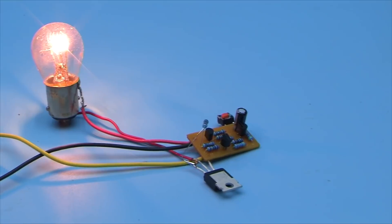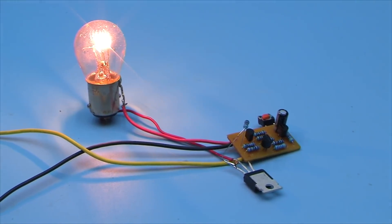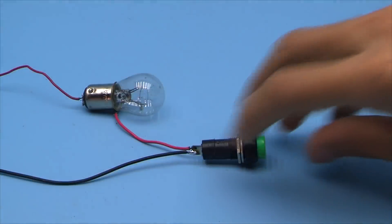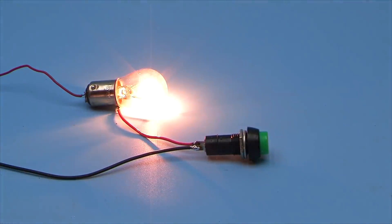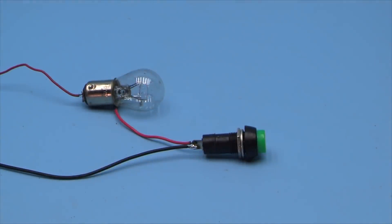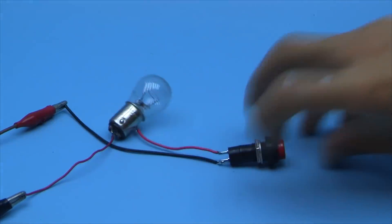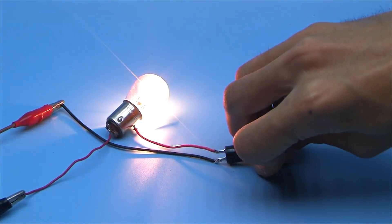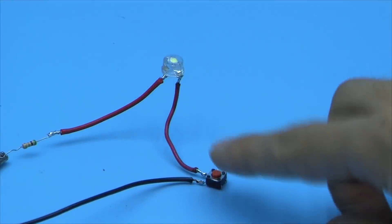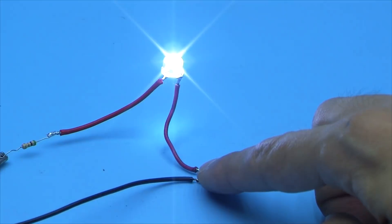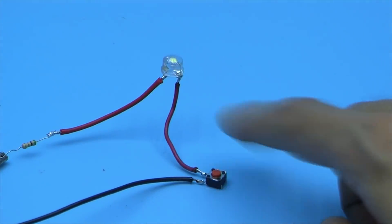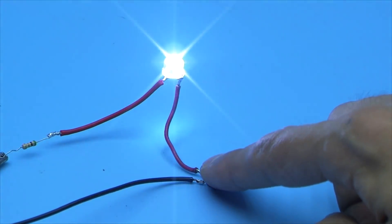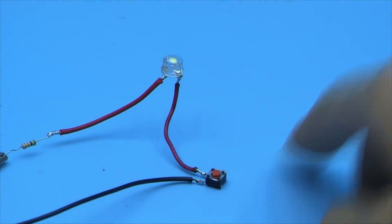Hi friends. Sometimes it is necessary to manage some load with just one button. Buttons could be of two types, with and without fixation. For example, if you use buttons without fixing to turn on the LED, then when pressed, the LED will light up and if you release the button, it will go out.